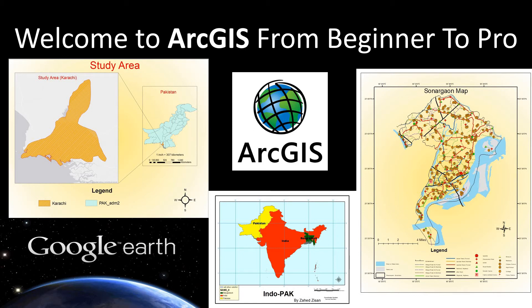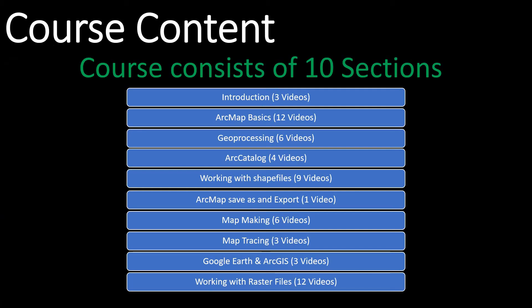Welcome to the ArcGIS from Beginner to Pro course. Let's look at the course content. The course is divided into 10 sections, but there is also a bonus section, so if you take that into account there are actually 11 sections in this course. These are the sections and how many videos each section holds.